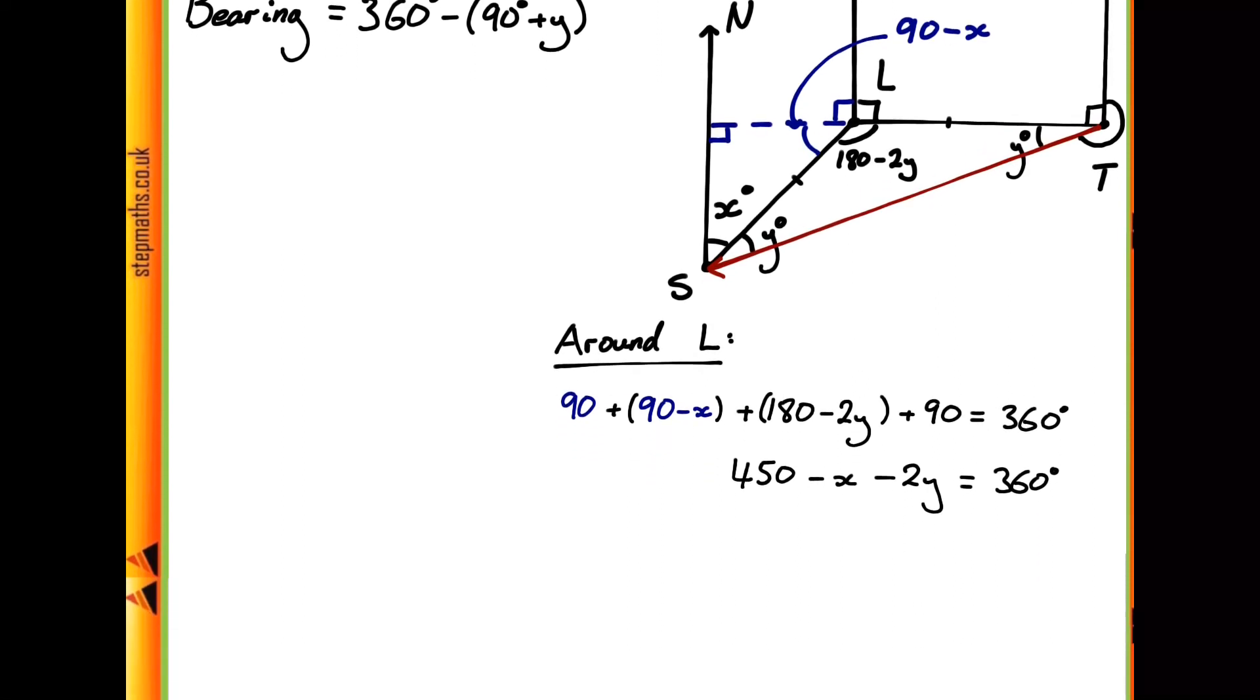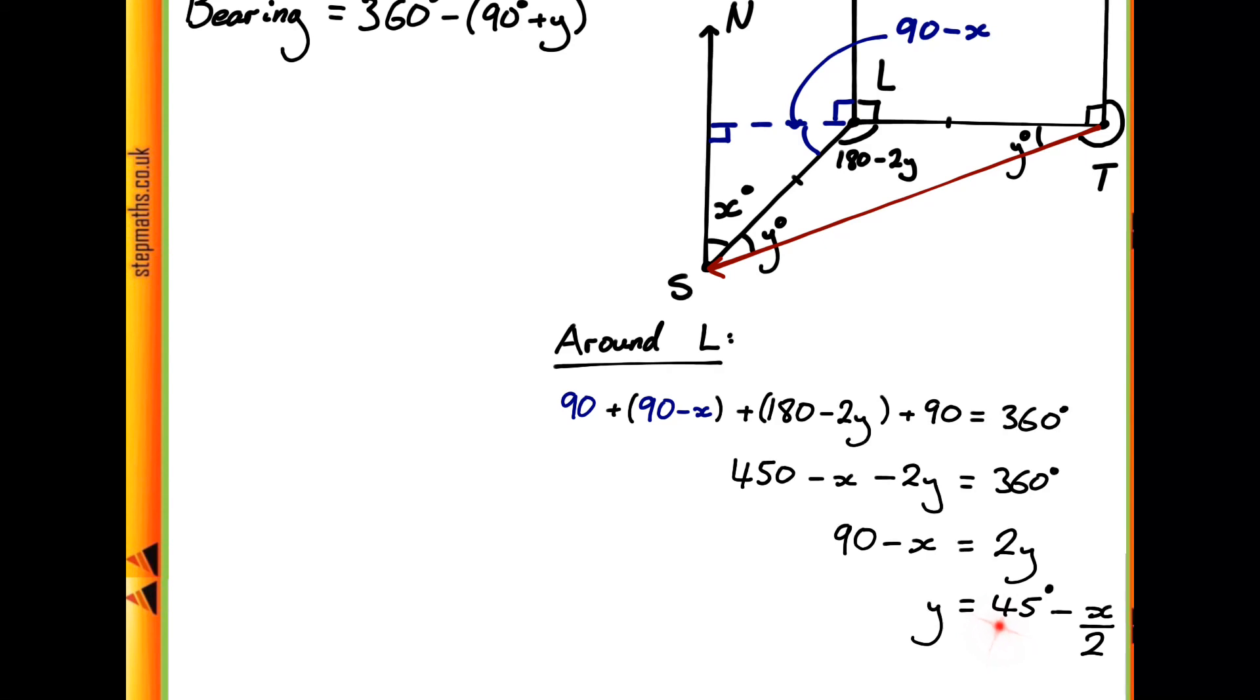Now of course we can simplify this a little bit further by taking the 360 away from 450 and moving y onto the other side since we want to find an expression for y to substitute into our bearing. So all we have to do next is just divide by 2 giving us 45 minus x over 2 where the 45 is just the 90 divided by 2.